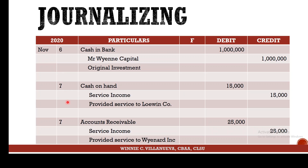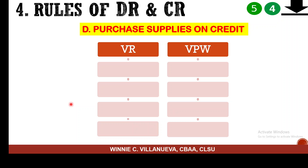This is how your journal page 1 looks: original investment, selling of services on cash basis, and selling of services on credit basis. Now let's go to the fourth sample.